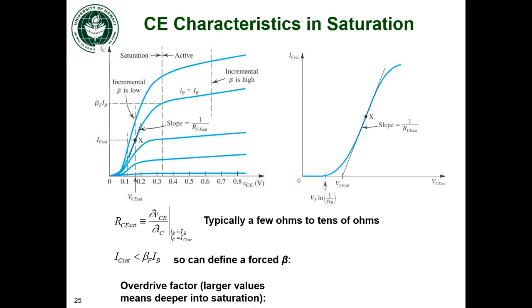In saturation, if we zoom in on the collector current versus collector to emitter voltage, we're looking at this part, the saturation part of the curve. We can define a resistance between the collector and emitter of the BJT, and to do that we're just going to take a linear approximation of the slope of the collector current curve.